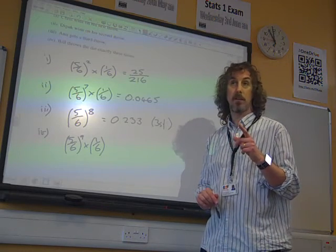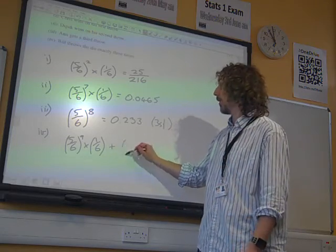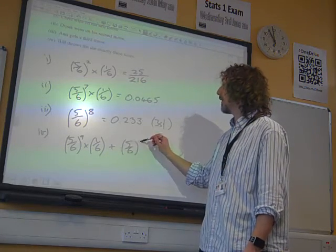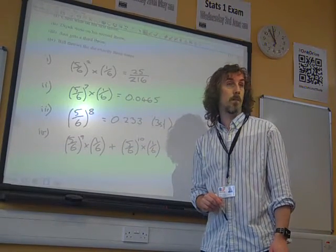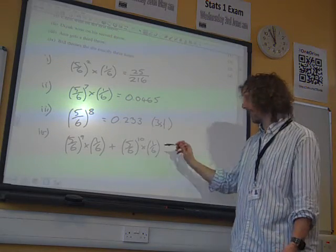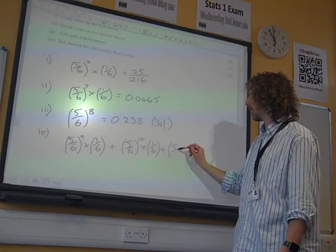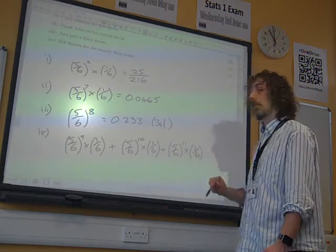But it's not the only way it could happen. Because it could happen if the next person, Chris, is successful. Then he would have had exactly three throws. So, that's five-sixths to the ten times a sixth. That's Chris being successful. Or it could happen if Deepak was successful on his next throw. Five-sixths to the eleven times a sixth.